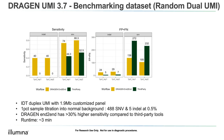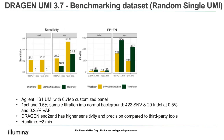Here is benchmarking data for a random dual UMI case. Compared to a third-party tool, Dragon end-to-end achieves better indel sensitivity — the third-party tool doesn't detect anything there — and our SNV sensitivity is much improved. Similarly for a single UMI workflow using an Agilent UMI panel, Dragon has much improved sensitivity compared to the more widely used tool. And we are now running an end-to-end workflow, which we didn't have in the past.